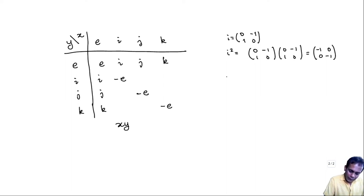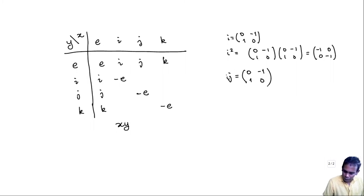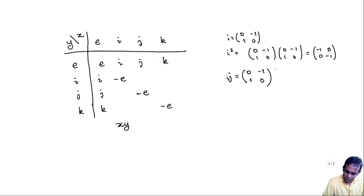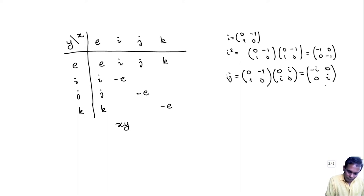What about I×J? I is [0,-1;1,0] and J is [0,i;i,0]. Multiplying these out, you get [-i,0;0,i], which is K. So I×J = K. Similarly, you can check that J×K = I and K×I = J.